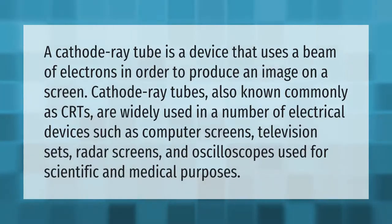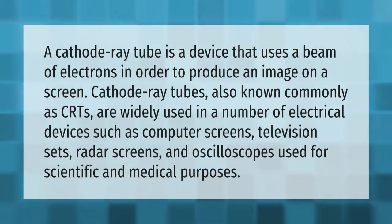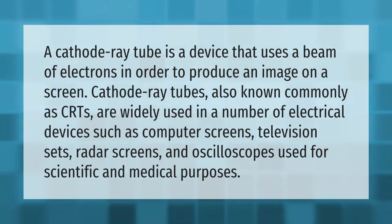A cathode ray tube is a device that uses a beam of electrons in order to produce an image on a screen. Cathode ray tubes, also known commonly as CRTs, are widely used in a number of electrical devices such as computer screens, television sets, radar screens, and oscilloscopes used for scientific and medical purposes.